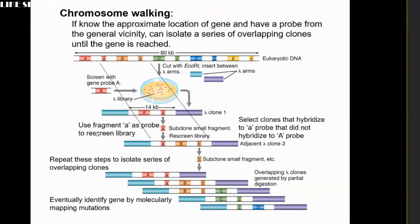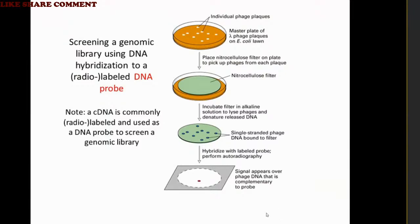Another confirmation method besides blue-white screening: colonies formed on the medium surface — paste a nitrocellulose membrane over the medium. The membrane carries single-strand DNA. After this, auto-radiography is performed. If illumination happens at the dots, those dots having complementary probe interaction confirm that the clone is recombinant.